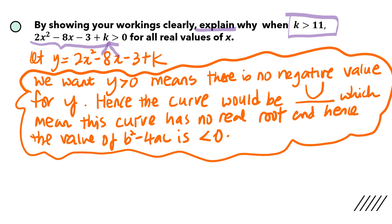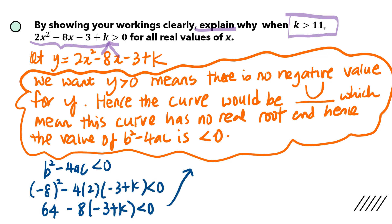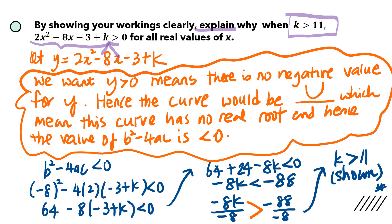This is similar to what we have done earlier; the phrasing of the question is different but the concept is still the same. We use b squared minus 4ac less than 0, substitute in all the values for a, b, and c, and end up with an inequality. The inequality sign is highlighted in orange as a reminder that when dividing both sides by a negative number, you need to flip the inequality sign. From there we get k more than 11, which is what the question requires us to show.